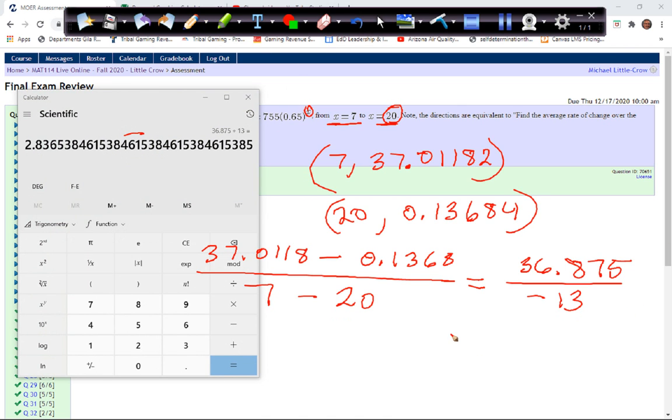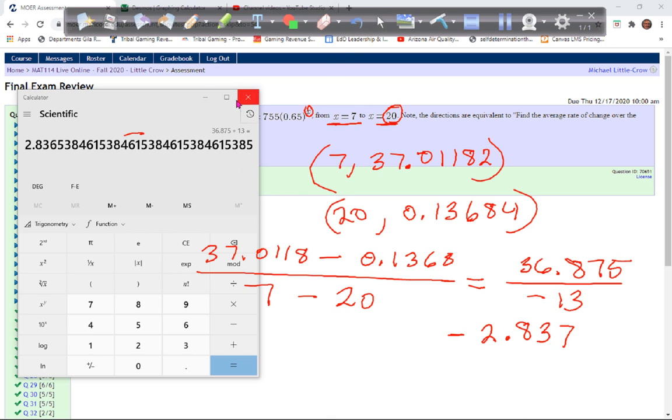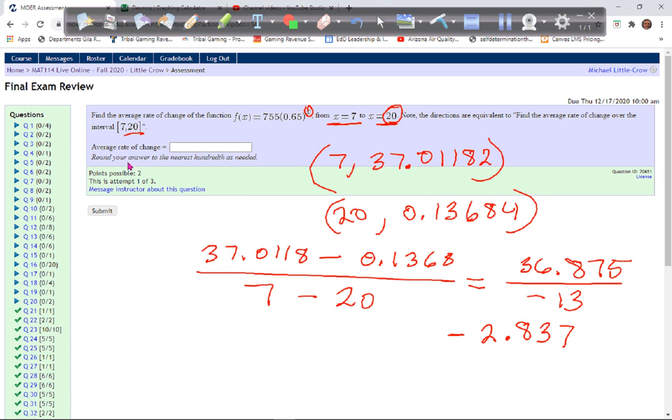And then we're going to take that number divided by 13. And since we know it's negative, it's going to be negative 2.837. Because we've got this 5 here, we round to 6. I think it was three decimal places, right? If not, we can. Oh, nearest hundredth. So actually, this was a 6, so we round to 2.84, negative 2.84.